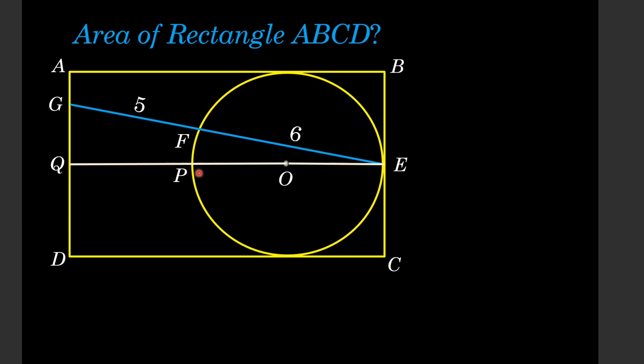Now we draw a line segment from point P to F. Since EP is the diameter of the circle and point F is on the boundary of the circle, the angle PFE is 90 degrees. Moreover, the angle EQG is also 90 degrees.